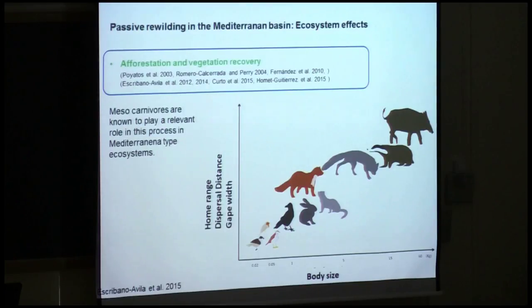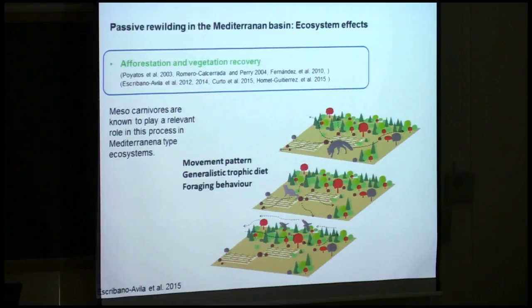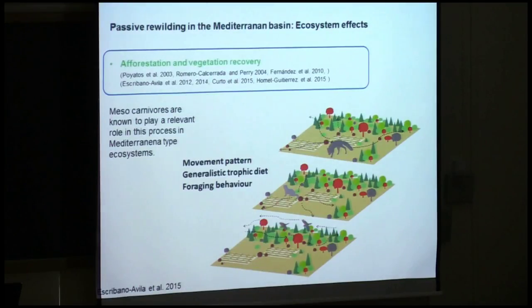Meso-carnivores are not limited in what they consume and can perform long movements, which is important in the context of passive rewilding because seed sources may be far away from the area undergoing afforestation or vegetation recovery. Landscapes subjected to passive management are usually a mosaic of remnant vegetation, cultivated areas, and areas under passive management. Meso-carnivores are able to move across this whole landscape, so the probability of moving seeds into the entire area is higher than with more specialist frugivores that move more frequently within remnant patches.